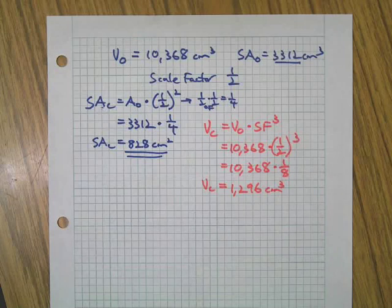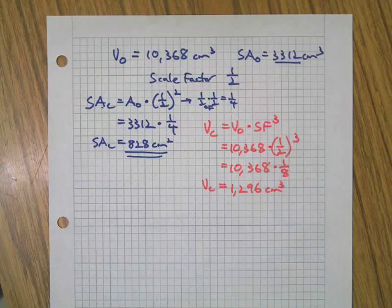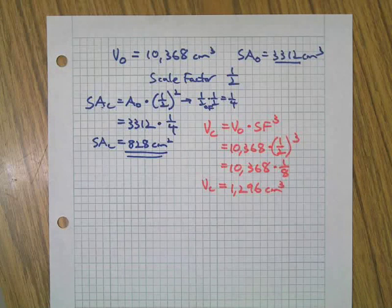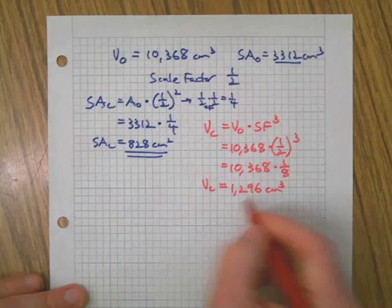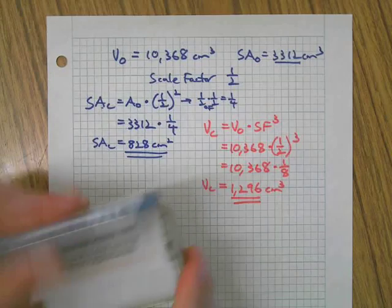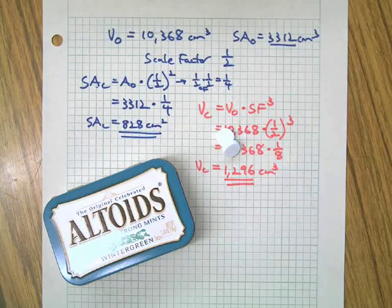Now you're prepared to do all kinds of problems like this. You've just learned how to find the volume and surface area of a copy of a three-dimensional object by simply substituting numbers and making calculations. I hope you enjoyed that — enjoy some fresh breath, have a couple of Altoids, talk to you later.